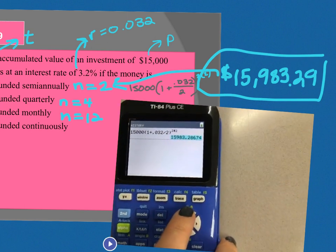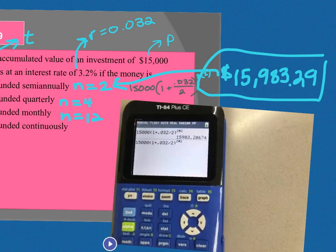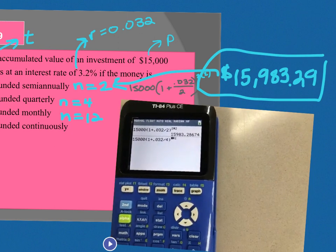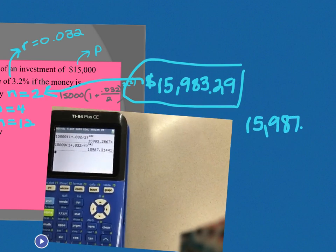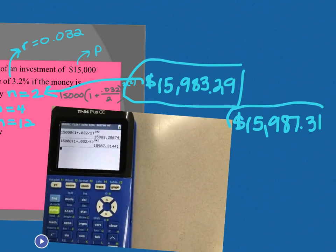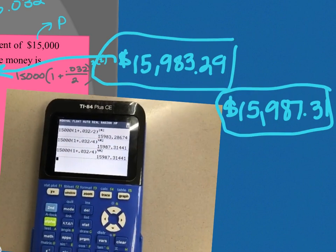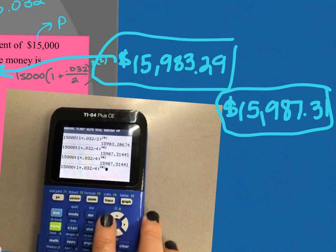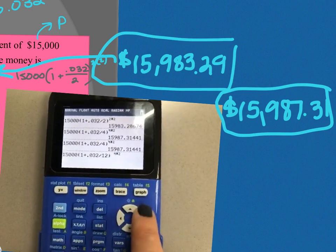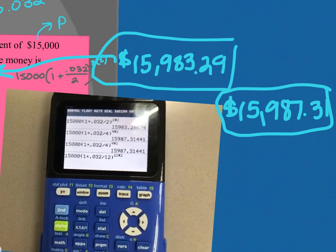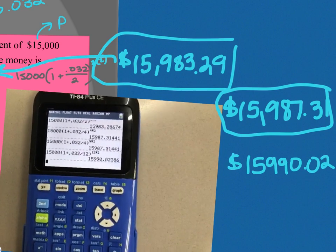B says quarterly, so on the calculator you can actually arrow up and hit enter, so it duplicates what's there, and then quarterly, which means N is now 4. I have to change the 4 in the denominator here, and the 4 up here. So I get that B is $15,987.31. And then compounded monthly, do that again. This time be careful because when I type in the 12, I lose the parentheses. I want to hit second, insert, get my parentheses back, and then 12 times 2, and I get $15,990.02. That's C.